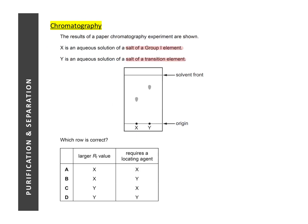In this question, we are looking again at a chromatogram. There are two different spots, X and Y, and we are asked to determine which one is correct with regards to their RF value and whether they require a locating agent. So from the formula of RF value, you should be able to deduce that a spot with a higher RF value would appear higher on the chromatogram. So in this case, spot Y or substance Y would have a larger RF value.